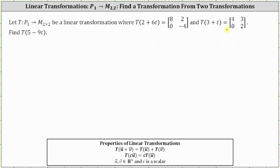To begin, we need to write 5 minus 9T as a linear combination of the expressions we know about, which are 2 plus 6T and 3 plus T. We have 5 minus 9T equals C1 times (2 plus 6T) plus C2 times (3 plus T). Now we need to solve for C1 and C2.